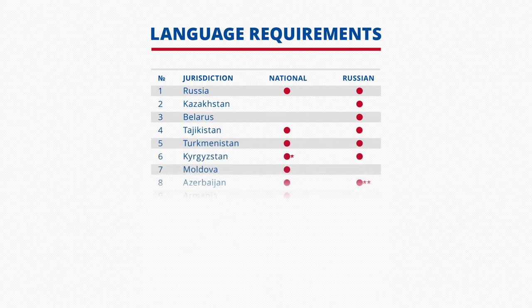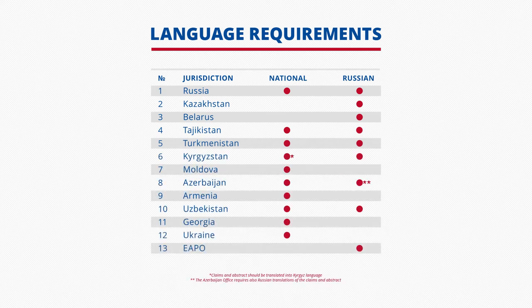This table shows the language requirements in the different jurisdictions. Ukraine, Georgia, Armenia, and Moldova require that national patent application materials be filed only in the national language. However, the other countries accept applications in both languages — national or Russian. The Eurasian office, with its eight participating countries, established a single working language, which is Russian. This option significantly decreases expenses for patent translation.